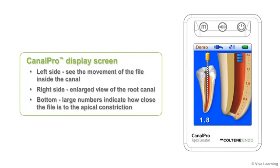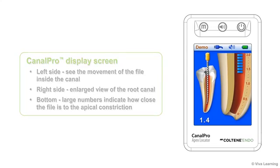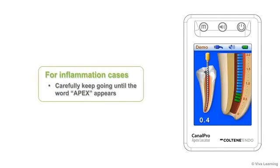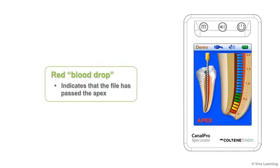Large numbers will show at the bottom of the screen to indicate how close the file is to the apical constriction. As the file gets closer to the apex, the colors in the right-hand image will begin to change. For most root canals, you'll want to stop when you reach the area indicated by three green bars, which is the apical constriction area. For inflammation cases, where the pus has to be transported upwards through the canal, you can carefully keep going until the word 'apex' appears. If you go too far, a red blood drop will show to indicate that the file has passed the apex.